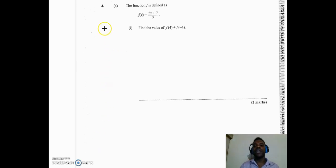We now move to question 4a on the CXE paper. The function f is defined as f of x equal 2x plus 7 over 5. Part 1 says find the value of f of 4 plus f of minus 4. Now there are two things you probably need to say here.